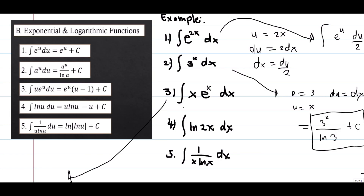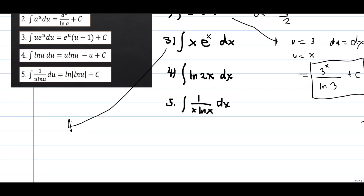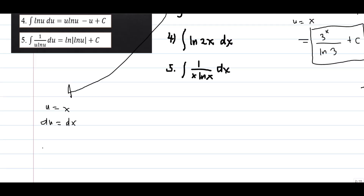Problem number three: what is the integral of x·e^x dx? We use the formula from theorem number three, where u = x and du = dx. Based on the formula, the result is e^x times (x minus 1) plus C. That is the final answer.